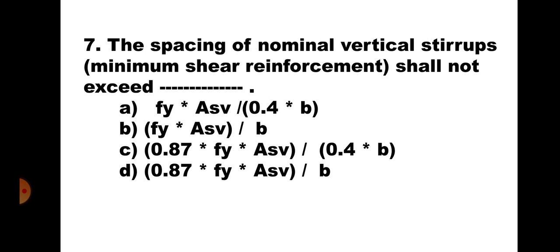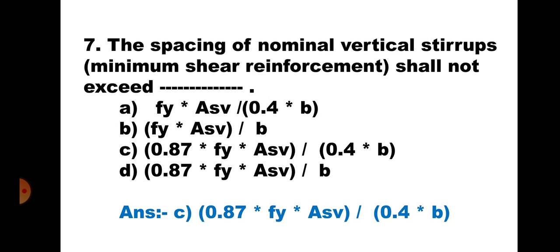Question 7. The spacing of nominal vertical stirrups, that is minimum shear reinforcement, shall not exceed: A. Fy×ASV / 0.4B, B. Fy×ASV / B, C. 0.87Fy×ASV / 0.4B, and D. 0.87Fy×ASV / D. The correct answer is that nominal shear reinforcement spacing shall not exceed 0.87Fy×ASV / 0.4B. Hence, the correct answer is C.